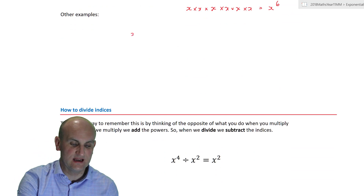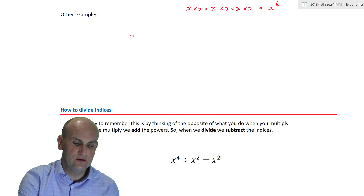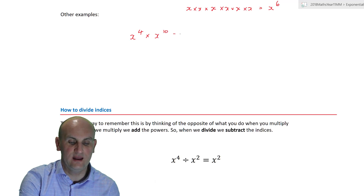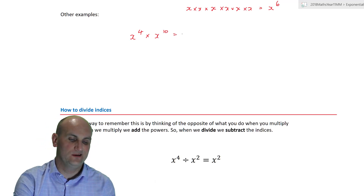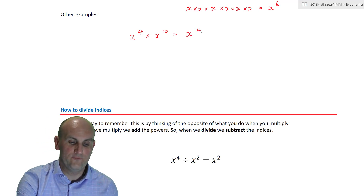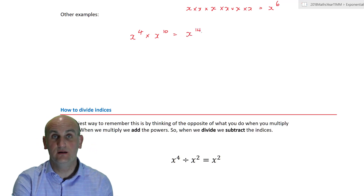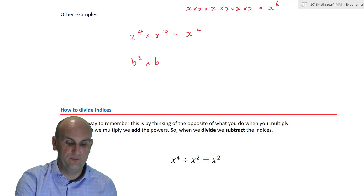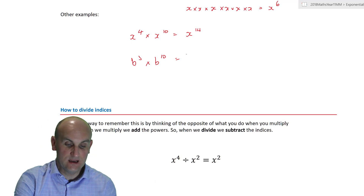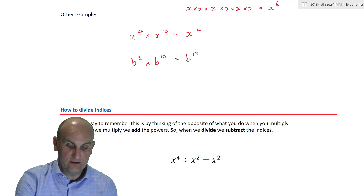More examples: x to the power of four times x to the power of ten — same base, so we add the powers to get x to the power of fourteen. What about b to the power of three times b to the power of ten? Just add them together: b to the power of thirteen. This works with negative numbers as well.